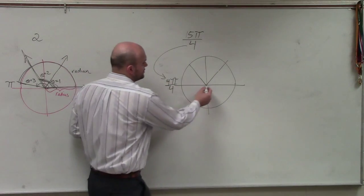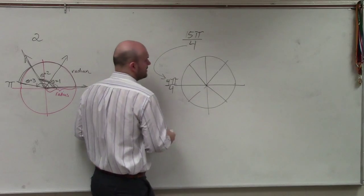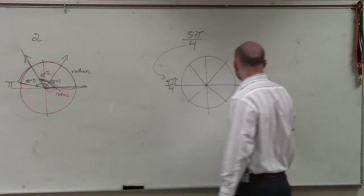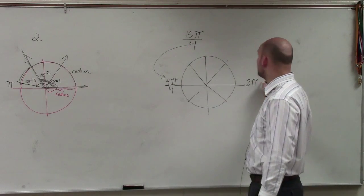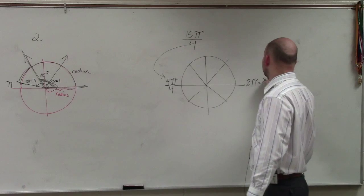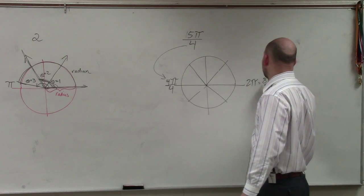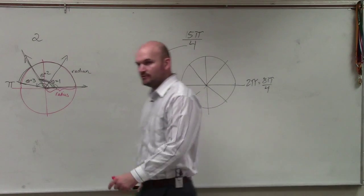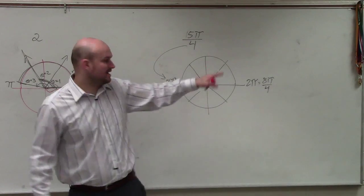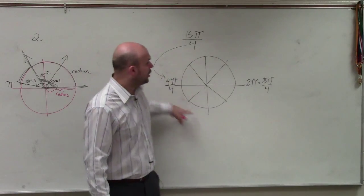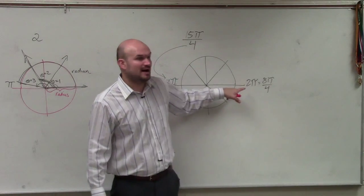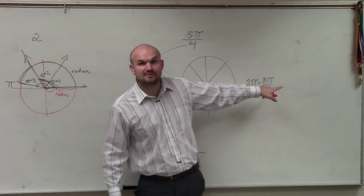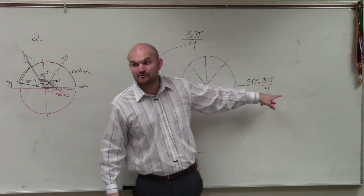And then you can do the same down below. However, I know that halfway around is pi, and we have been practicing saying that all the way around is 2 pi, which in terms of our denominator 4 can be written as 8 pi over 4.